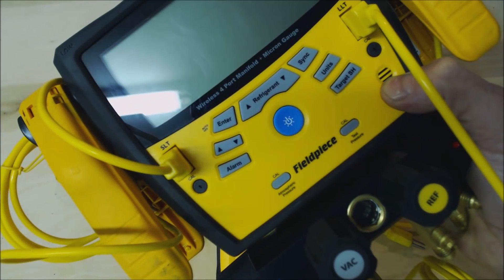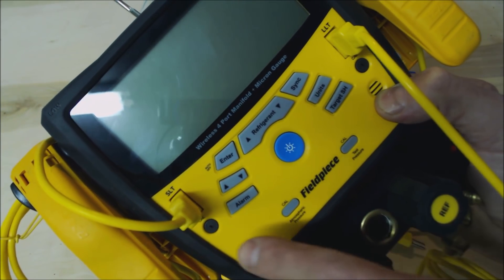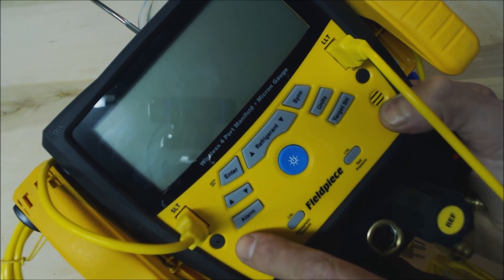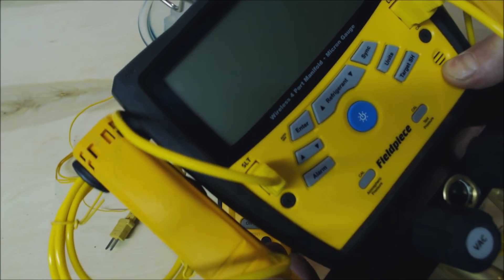And if you have a digital gauge set such as this right here, you can go ahead and adjust these pots as well. It works just the same way. So you just put these clamps right in your ice water.